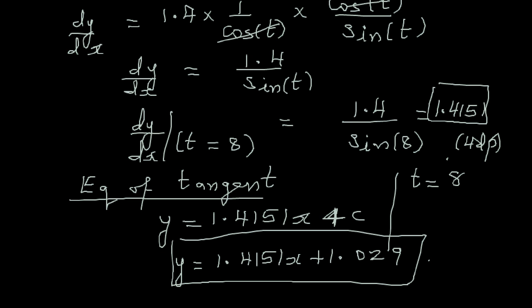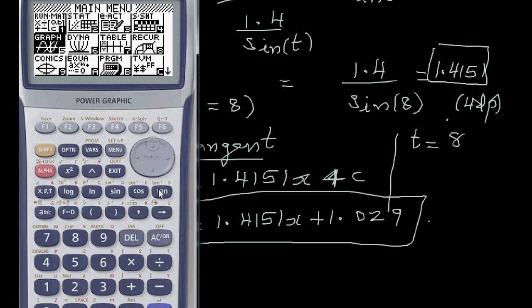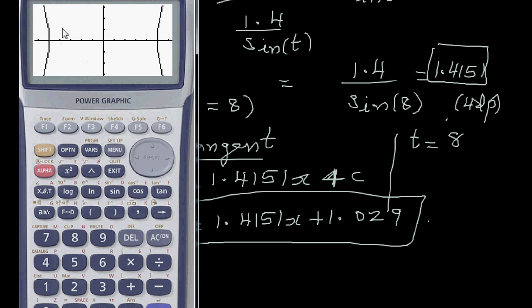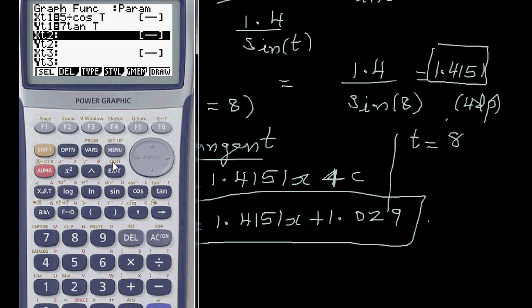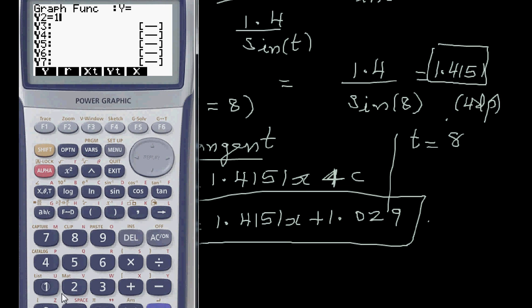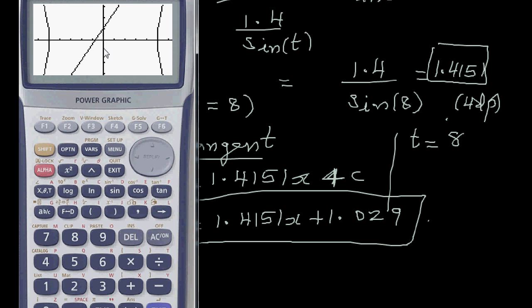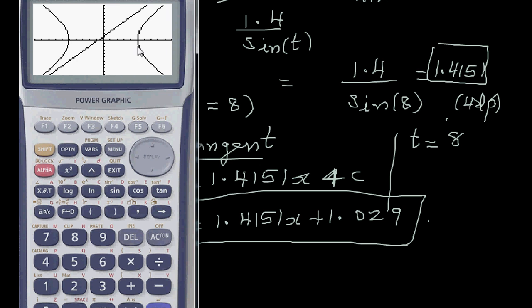You can confirm this on a graphic calculator. Go to graph, draw the parametric curve — this is a hyperbola — then type the tangent line equation y equals 1.4151x plus 1.029 into y2 and draw it. You can see the line is tangent to the hyperbola when t equals 8. Hopefully this video has been helpful.